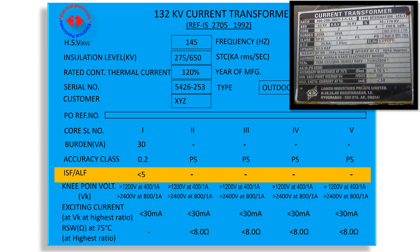Some CT nameplate contains ISF and ALF. ISF means instrument safety factor and it is applicable for metering class. In some cases, the primary current may be increased up to 5 times of rated primary current may damage the equipment connected. So, the manufacturer should mention the safety factor. Accuracy limit factor ALF used for protection class. It means the composite error will be within limits if the primary current increase up to 10 times of rated primary current.